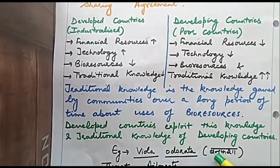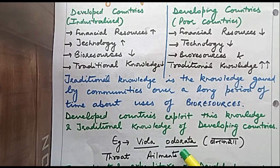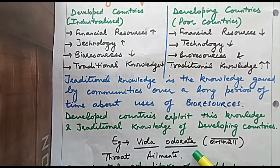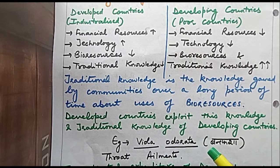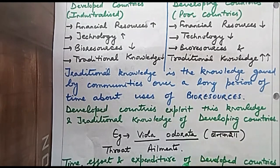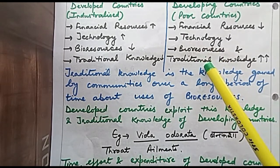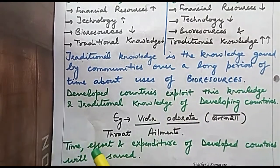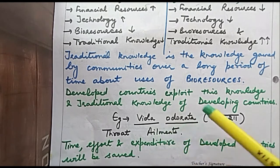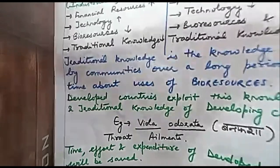For example, Viola odorata — known in Hindi as a plant used for cough and cold — contains a responsible gene. If developed countries extract this gene and use it in a fast-growing plant that produces more yield, they can gain financial benefits. This way, developed countries save time, effort, and expenditure by using bioresources and traditional knowledge of developing countries. This comes under biopiracy.